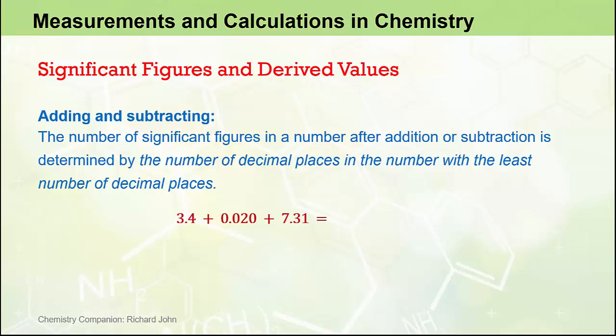Here we are adding three values together. They have varying numbers of significant figures and varying numbers of decimal places. When we add these three numbers together in our calculator, we get 10.73. Now this number here, the 3.4, has only one decimal place in it, and this is the number with the least number of decimal places. Our end answer therefore needs to be restricted to just one decimal place, and so our end answer here is going to be 10.7. So for addition and subtraction, it's about the number of decimal places in the original value, rather than the number of significant figures.